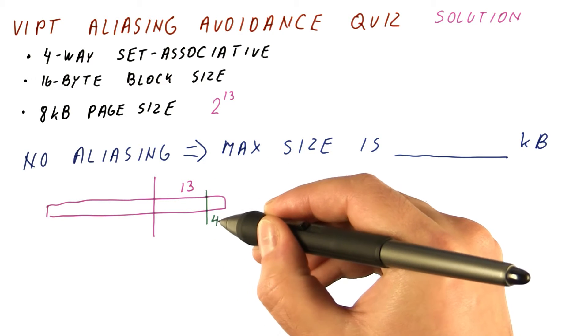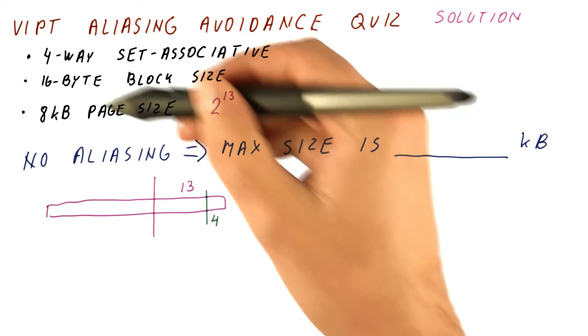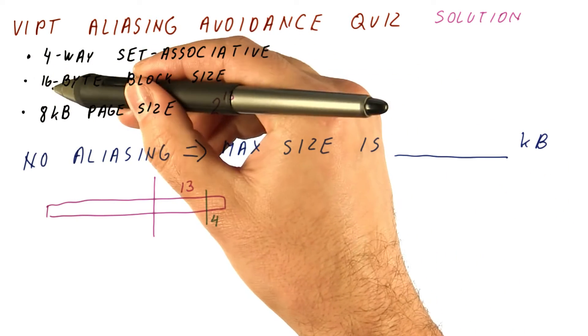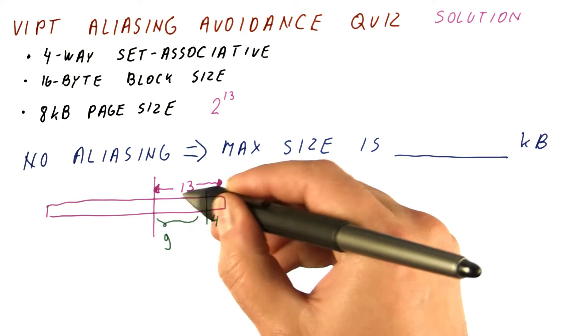size means that the cache block offset is 4 bits. That's how many bits we need to tell us where in the 16 bytes we are. And that means that we have 9 bits for the index.